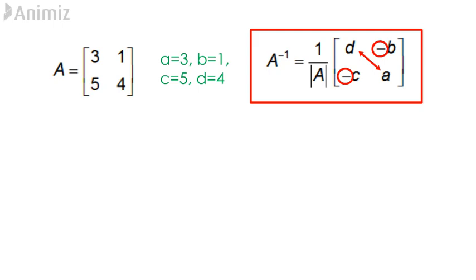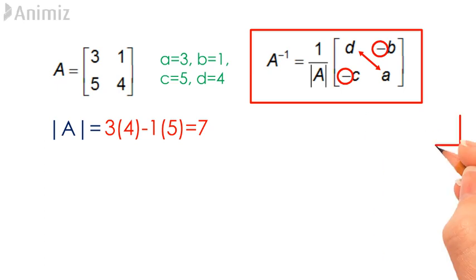To answer the question, we first need to find the determinant of A. This is done by taking the product of 3 and 4 minus the product of 1 and 5. This gives us the value of the determinant of A to be 7.